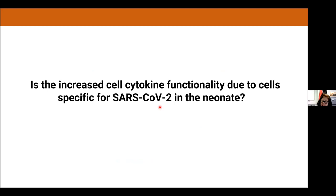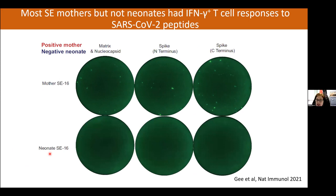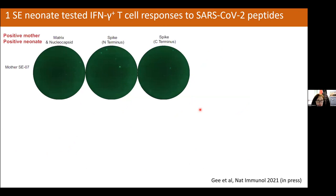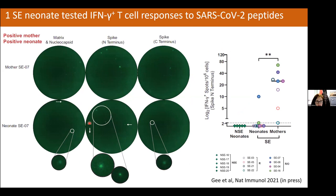The key question was whether this increased cytokine functionality reflected cells specific to SARS-CoV-2 in the neonate, or some form of in utero priming making cells more responsive generally. To measure SARS-CoV-2-specific responses we used an ELISPOT assay, where each green dot represents a T cell making interferon gamma in response to peptide pools from matrix, spike, and other SARS-CoV-2 regions. A COVID-positive mother clearly showed interferon gamma-producing cells reacting specifically to SARS-CoV-2. In neonates with increased interferon gamma T cells, the response was generally not SARS-CoV-2-specific.